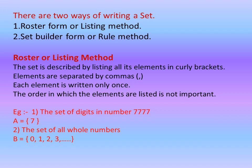Let's see one example to make it clear. The set of digits in number 7777. As the rule says, it should be written only once, separated by commas, inside curly brackets. So, I have written set A = {7}. Second, the set of all whole numbers, B = {0, 1, 2, 3, ...}. Here, you can see dot dot dot used to show continuation because whole numbers are infinite.